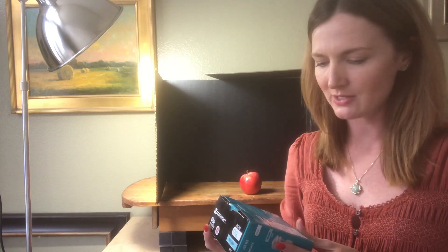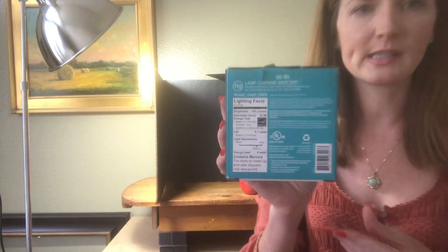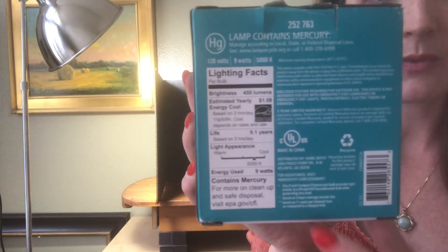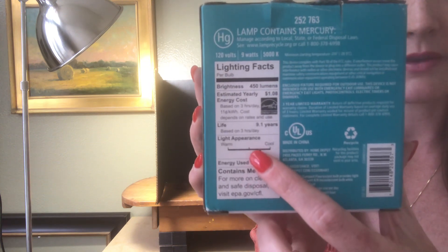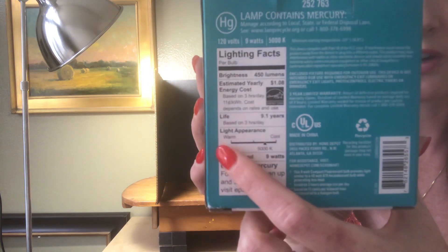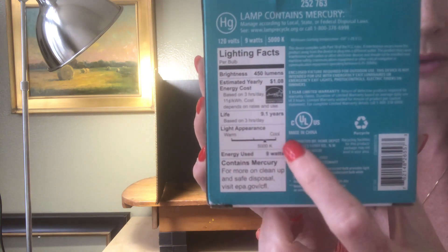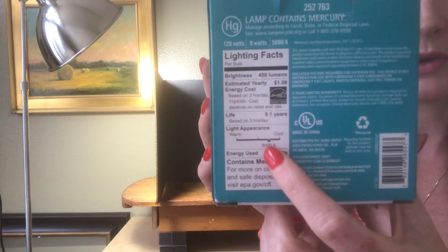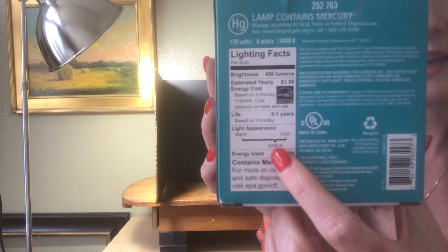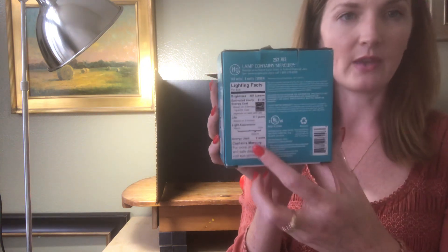You can find light bulbs that have a cool temperature. What you want to look for is on the back of the box, look for the light temperature - on one side it'll say warm, on one side it'll say cool. You want to look to see where that is. Usually it's 5000K and that's what tells you that it's cool. A lot of times these are called daylight bulbs.